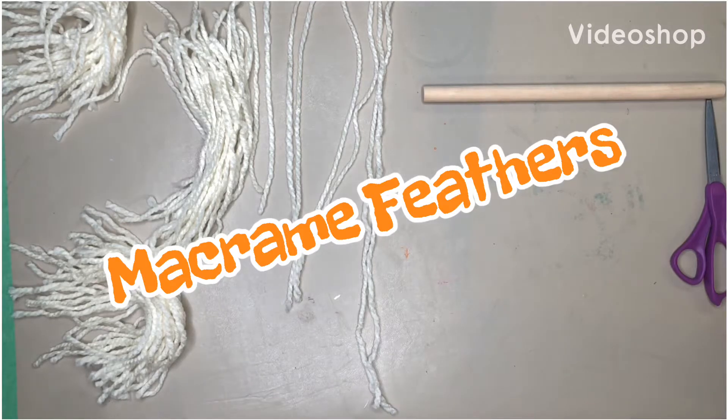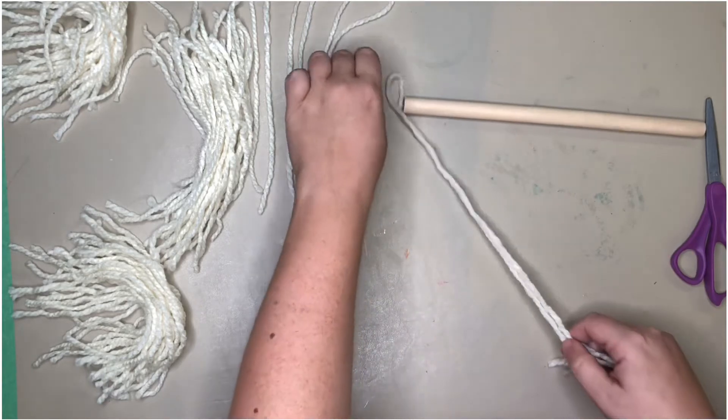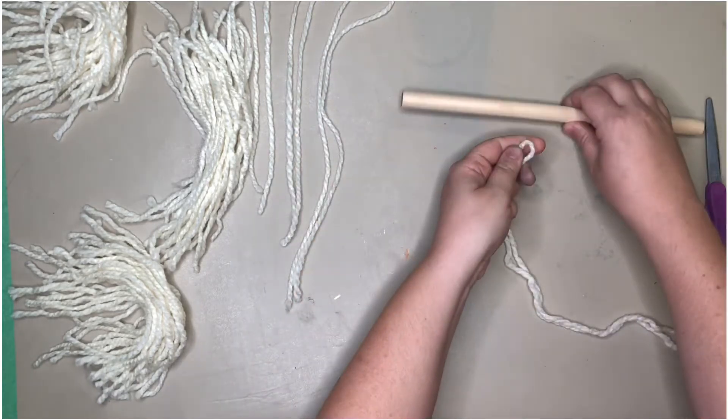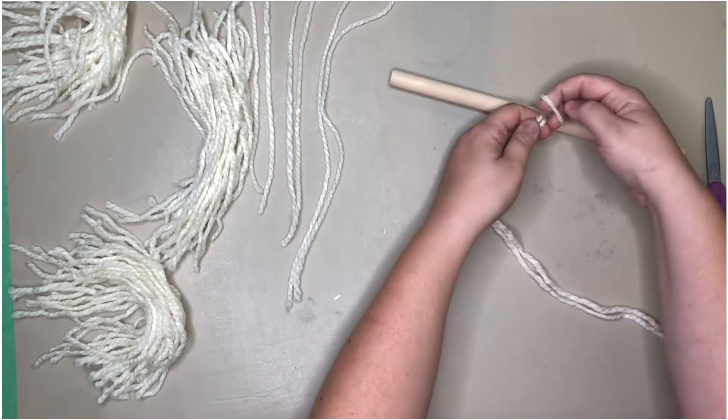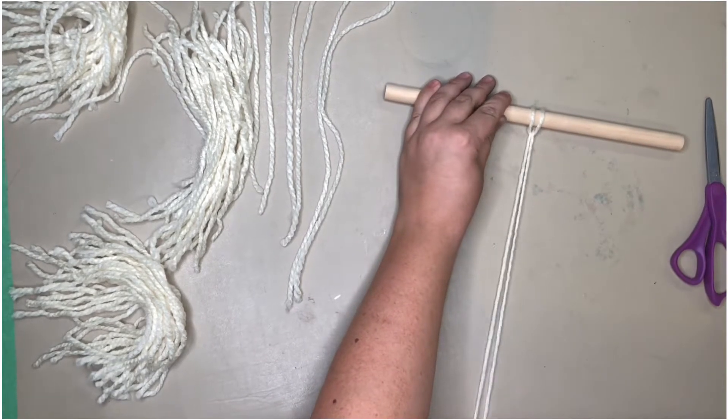In this video we are going to be making a macrame feather wall hanging. I have lots of different lengths of yarn. First we were going to use four different lengths, and I decided to use the longest one in the middle.